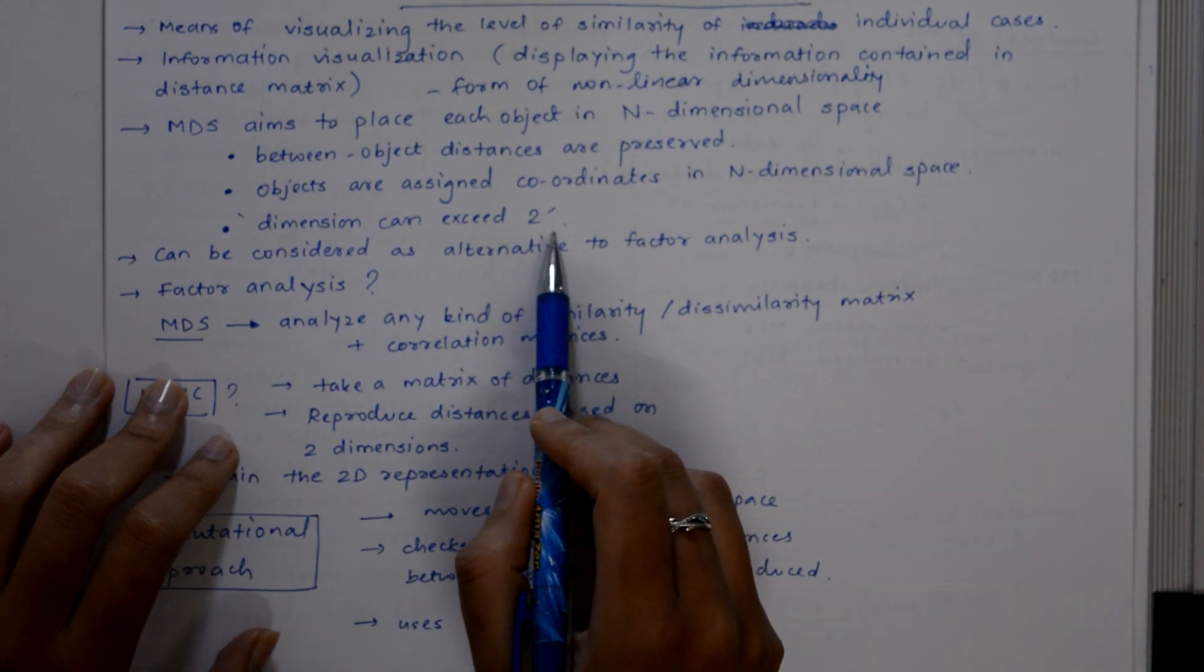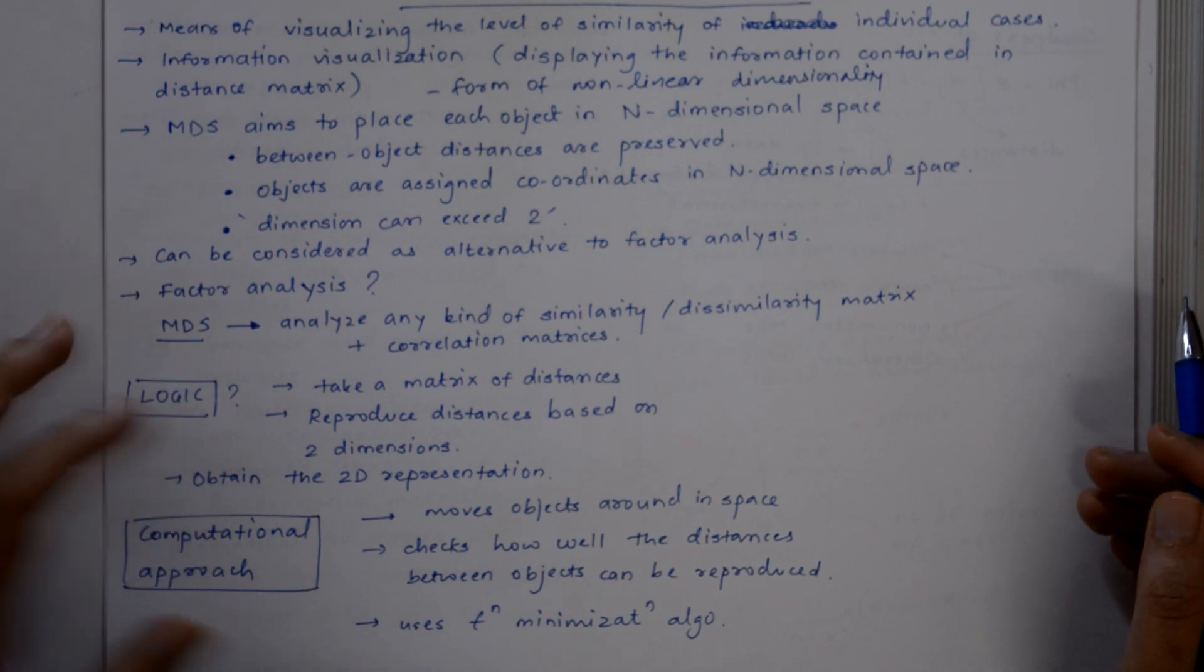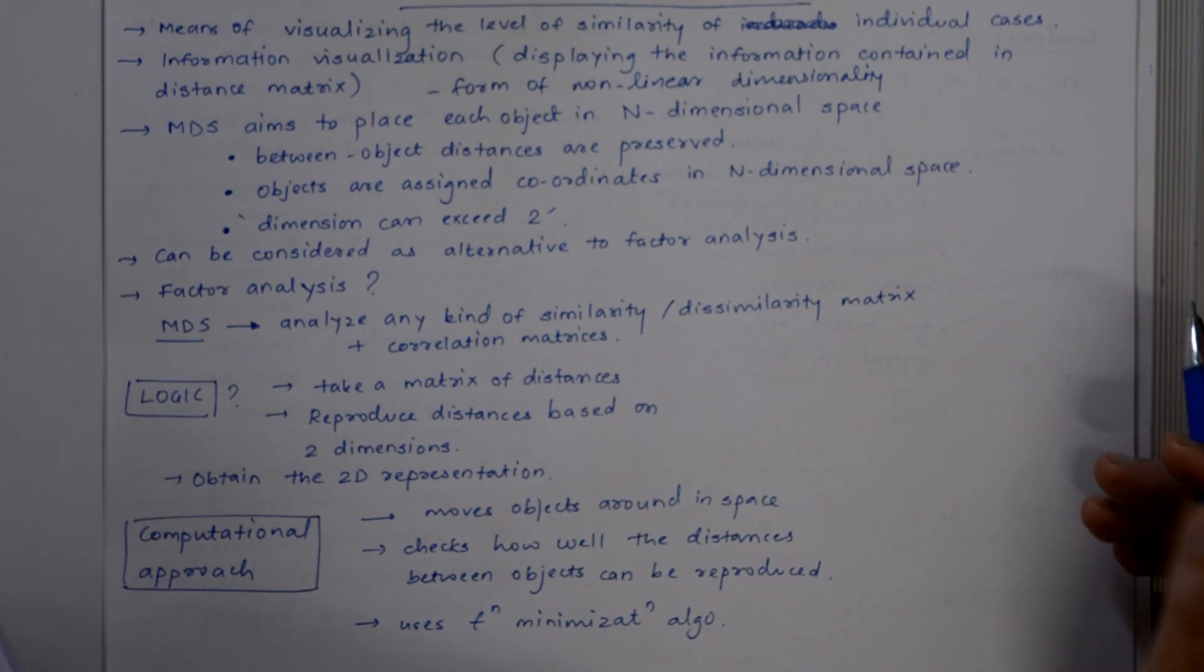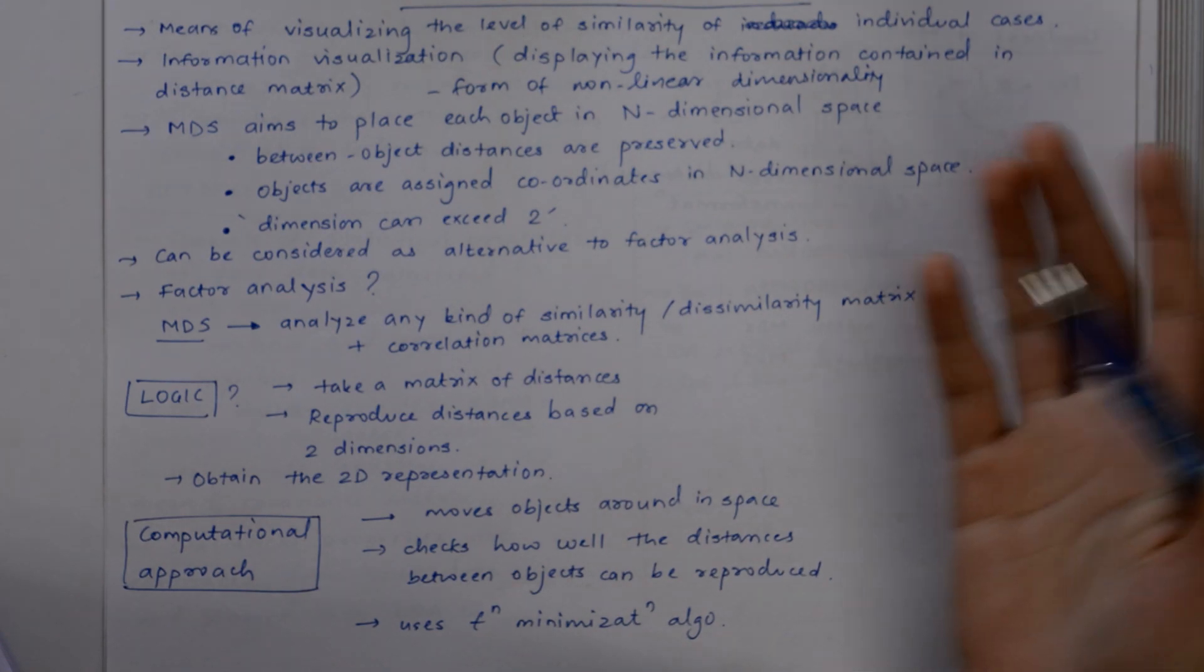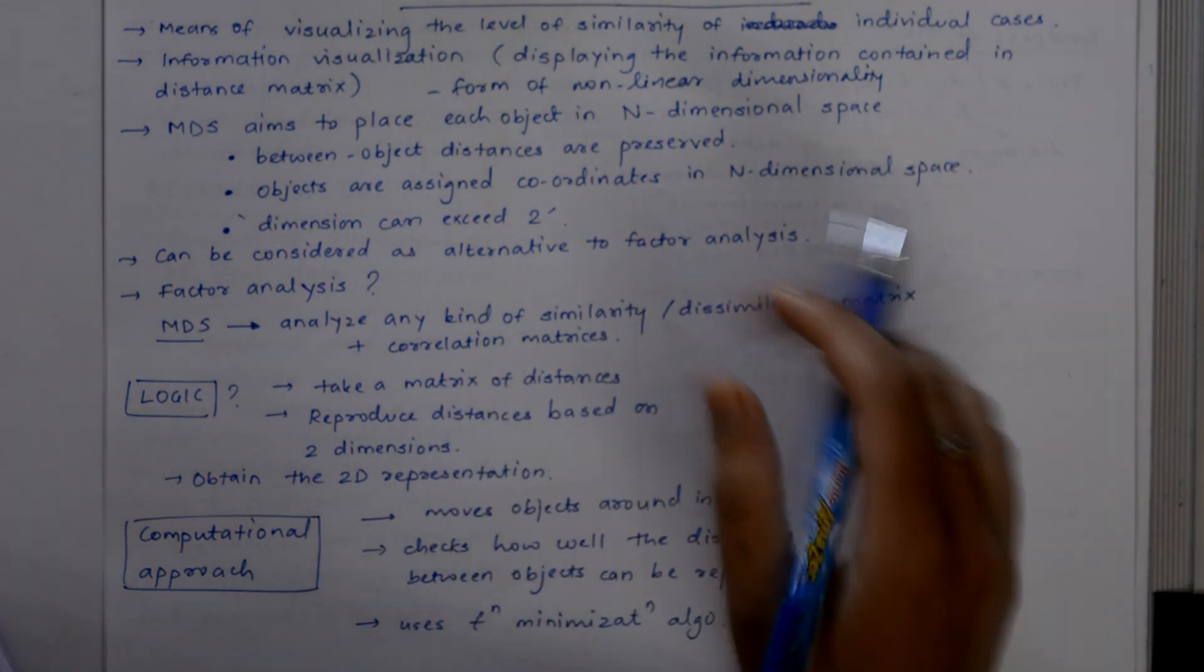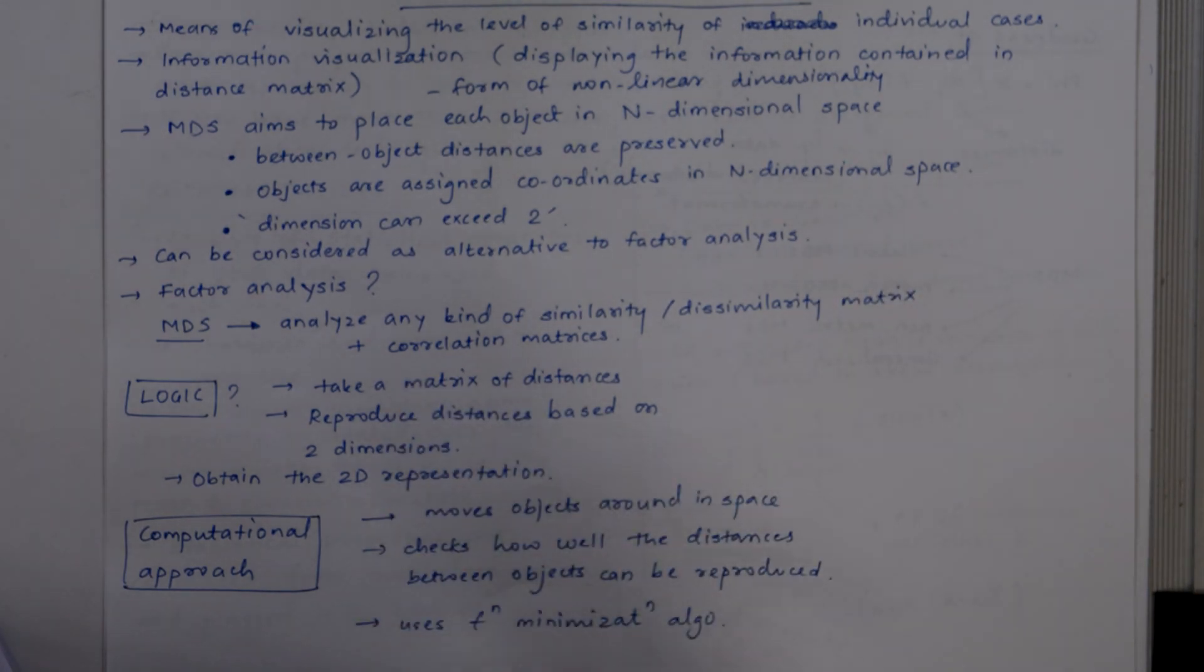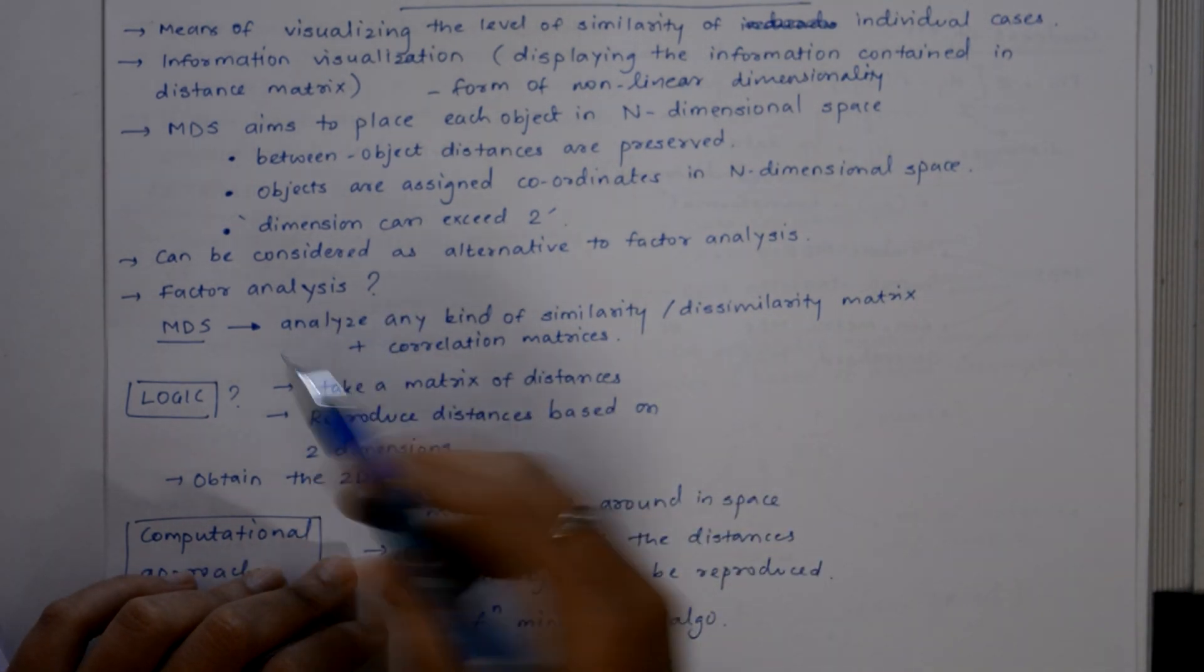In case of factor analysis, the similarities between objects (that is, variables) are expressed in a correlation matrix. With MDS, you can analyze any kind of similarities or dissimilarities in addition to the correlation matrix. That is all about the factor analysis and its comparison with multidimensional scaling.